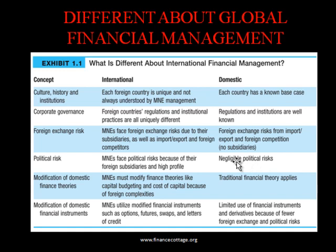The next point is political risk. For a domestic corporation, the political risk is very low or sometimes negotiable with its own government, but for a multinational corporation it is very difficult to negotiate with the governments of every country in which its subsidiaries are working. It is also a requirement for a multinational corporation to modify financial theories — such as capital budgeting theory, agency theory, or dividend policy — in accordance with each country in which its branches are working.